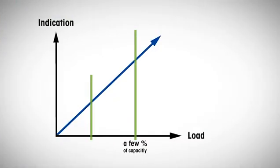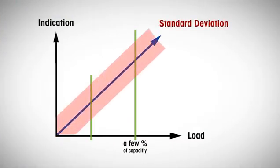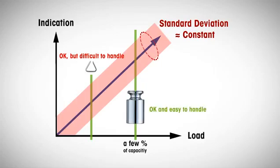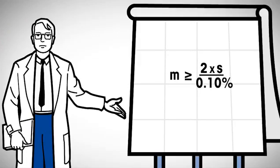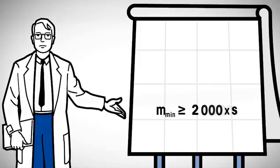USP states that the standard deviation is virtually independent of the sample mass at the lower end of the weighing range. Hence, a test weight of a few percent of the balance capacity can also be used to assess repeatability and derive the minimum weight from this formula.